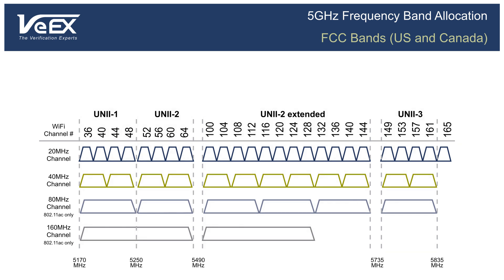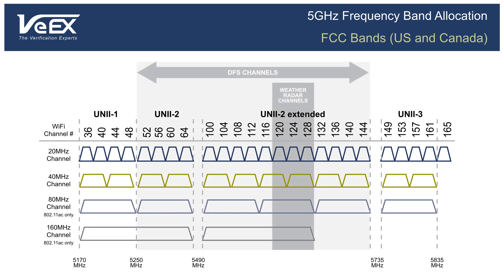While most Wi-Fi devices will support only UNII 1, channels 36 to 48, and UNII 3, channels 149 to 165 for indoor use, the FCC and other regulatory bodies allow the use of the UNII 2 and 2E bands, provided that your device's radio can support Dynamic Frequency Selection, or DFS, and Transmitter Power Control, or TPC. DFS and TPC are designed to detect and automatically adjust Wi-Fi channels if military or weather radar systems are present, in order to avoid interfering with these systems.